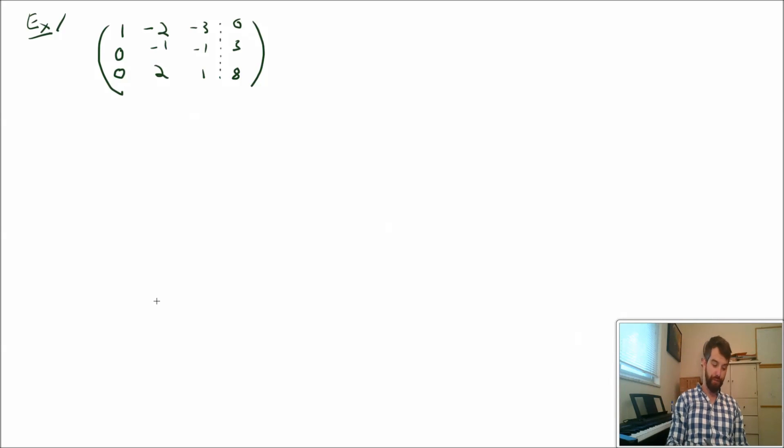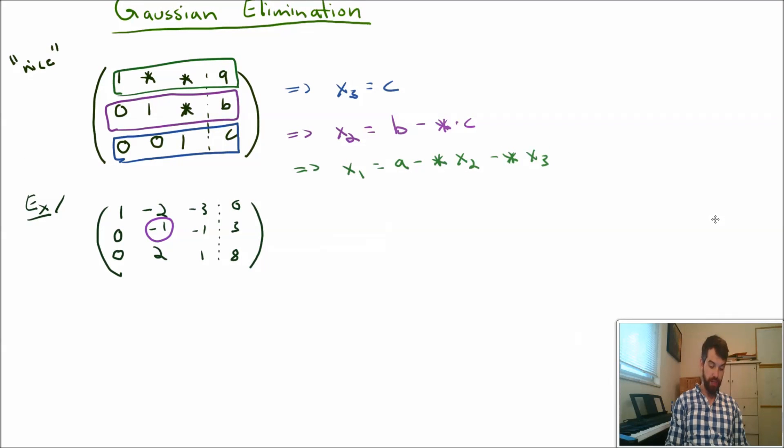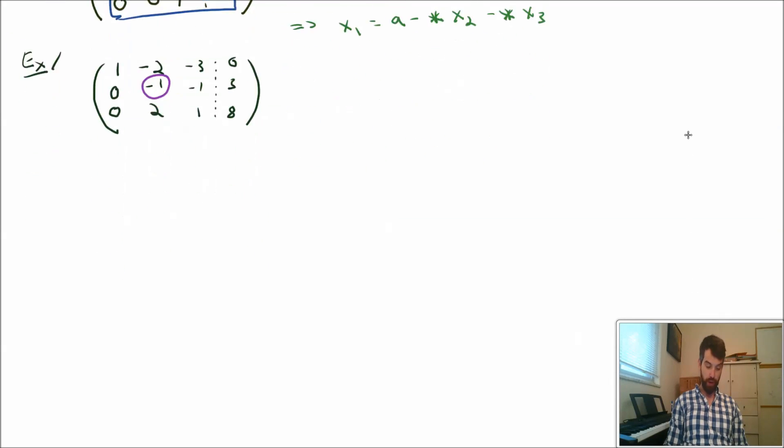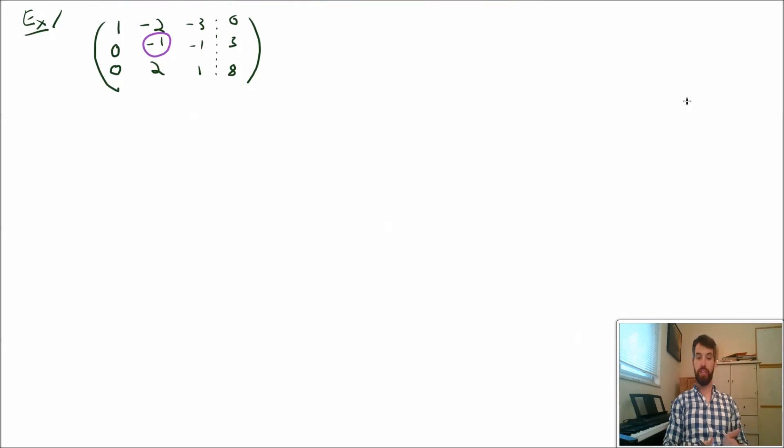First is, I'm going to focus first on this minus one right here. Now, if I look back to what the form that I wanted was, I wanted to have a positive one in that place, and here I have a minus one. So I want to be doing a manipulation that is going to change this into a positive one. And I can just multiply that row by minus one. One of my EROs is I can multiply a row by a constant. So I'm going to multiply the second row by minus one.